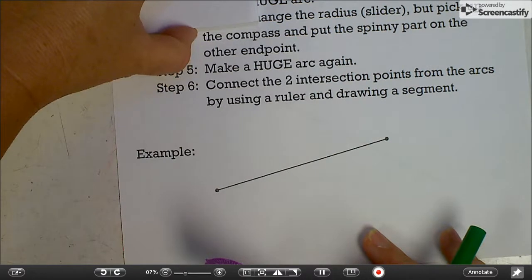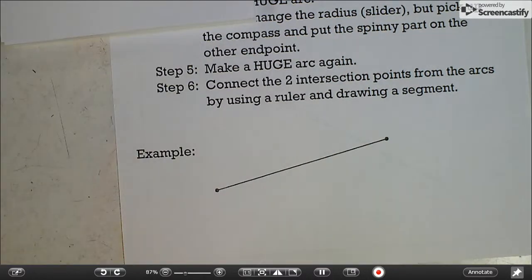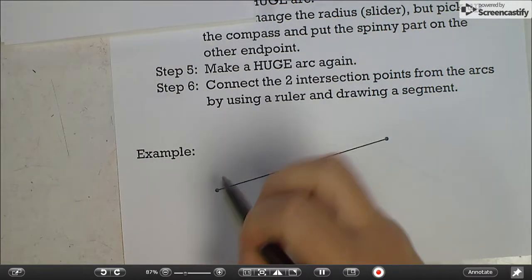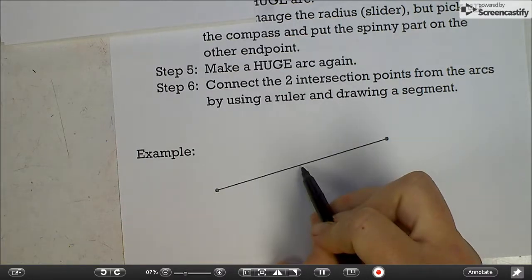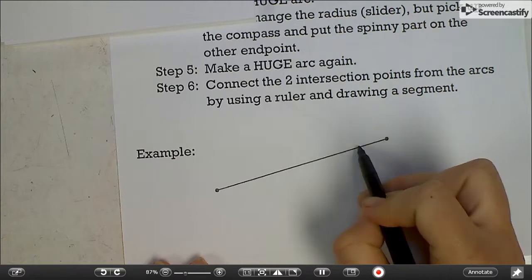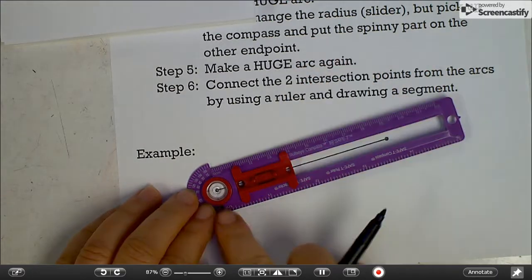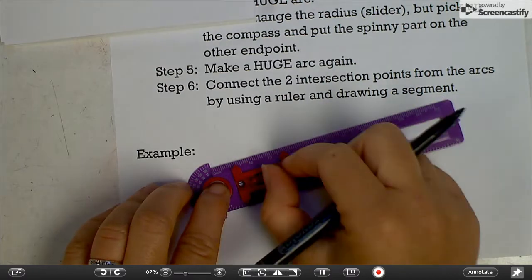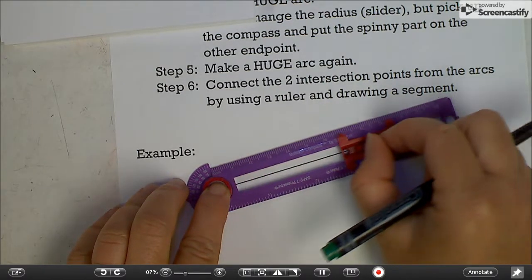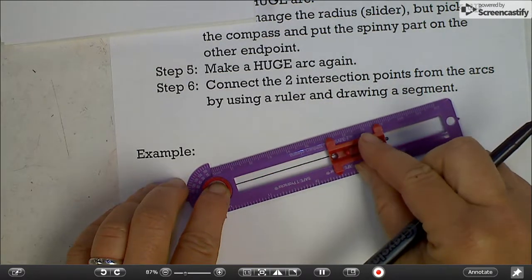So to do a perpendicular bisector, you kind of have to eyeball where the midpoint is going to be. It's going to be somewhere around here. So you want to make sure that when you open your compass, you're opening it somewhere in here beyond the midpoint. So I'm going to put the spinner on one endpoint and make sure that one of the holes is beyond the midpoint. So that's beyond the midpoint there.